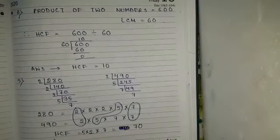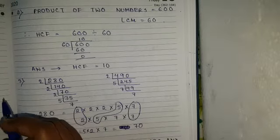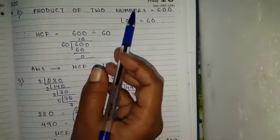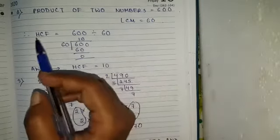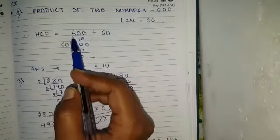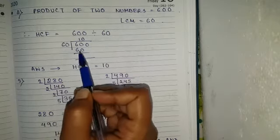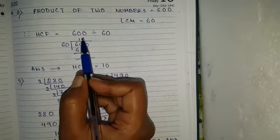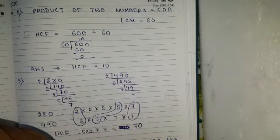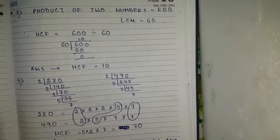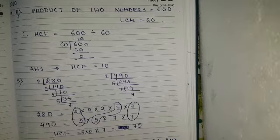Question number 2: the product of two numbers is 600 and their LCM is 60 — find their HCF. Product of two numbers is given as 600 and LCM is 60. When finding HCF, we divide product by LCM: 600 divided by 60. 60 ones are 60, so HCF equals 10. When finding HCF or LCM, first find the product then divide.